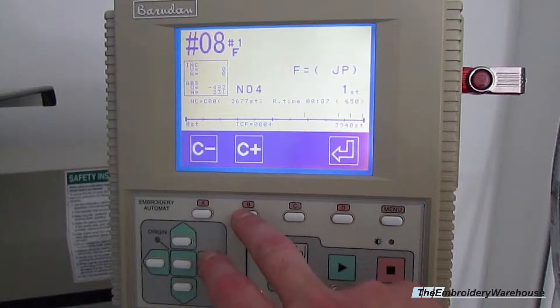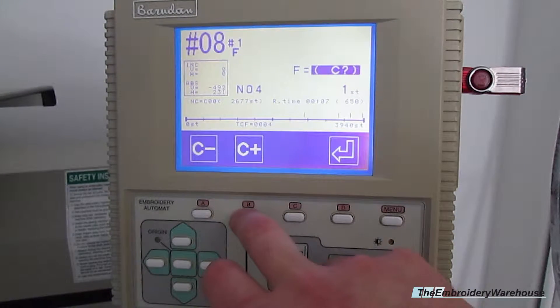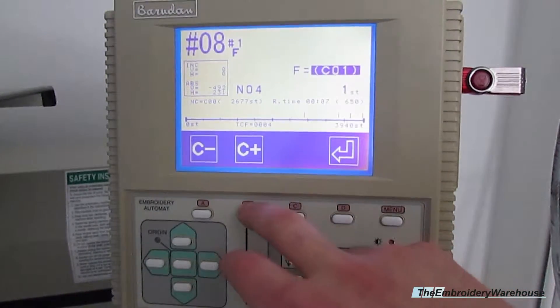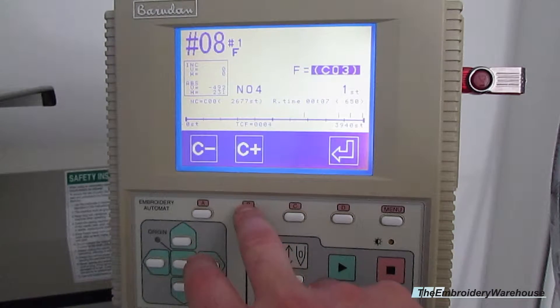Here you would select the order of colors that you need to run. I'm going to go ahead and hit C plus until I get to the letter C, and then once it says C1, that's for color 1, color 2, color 3.